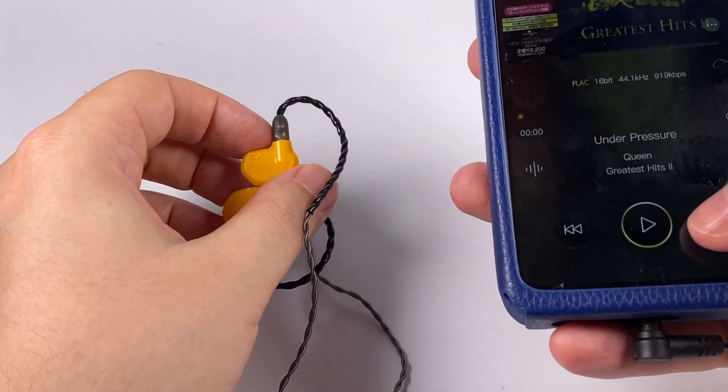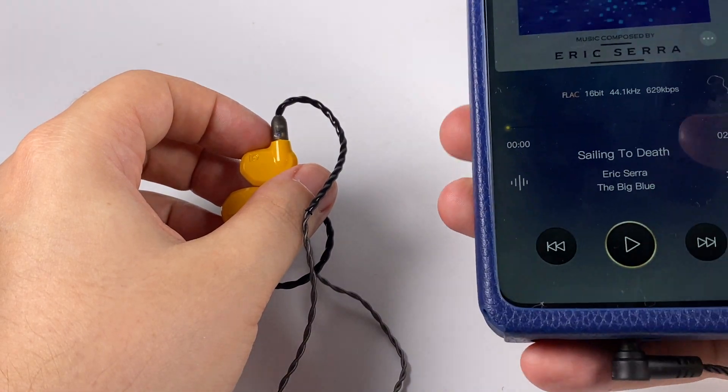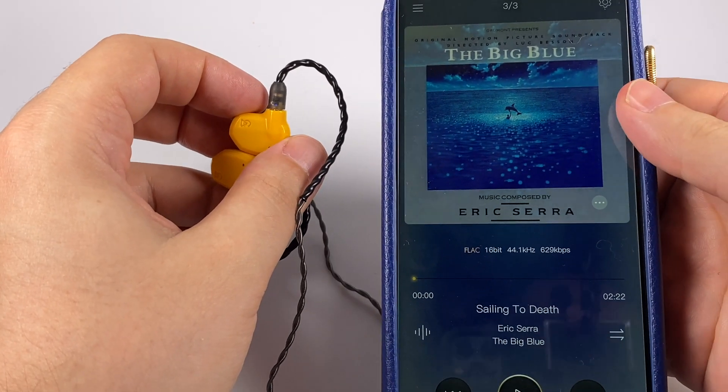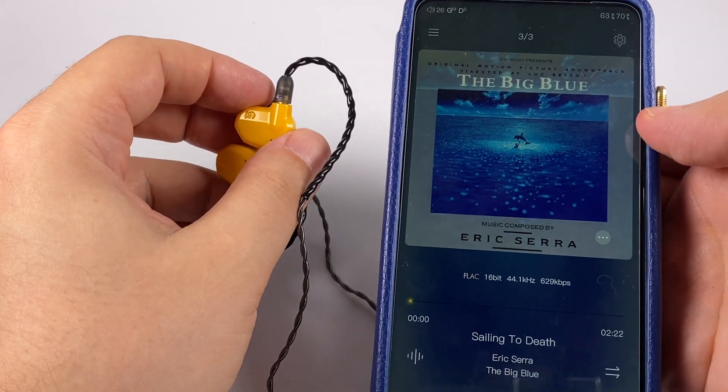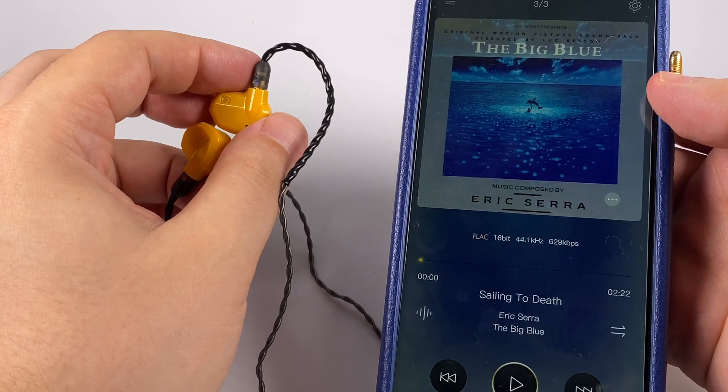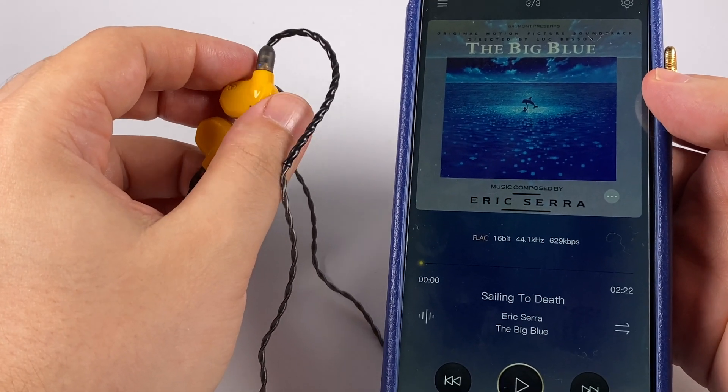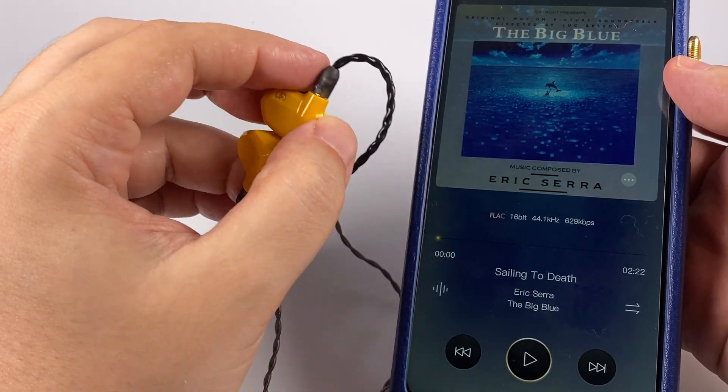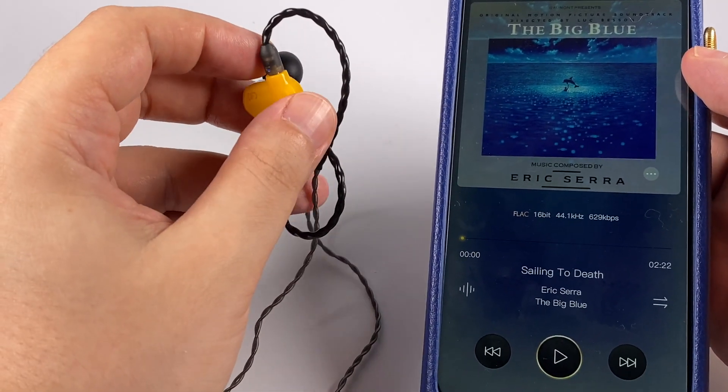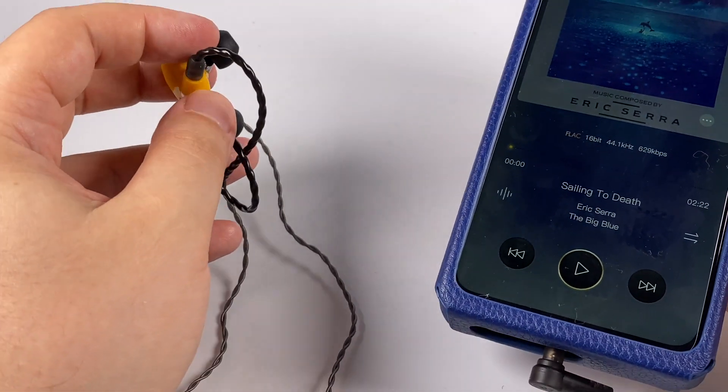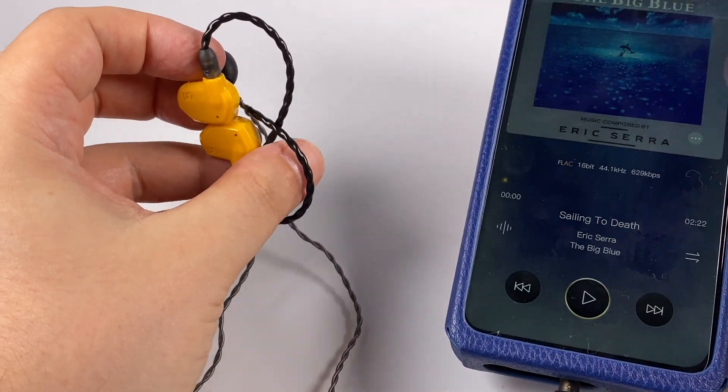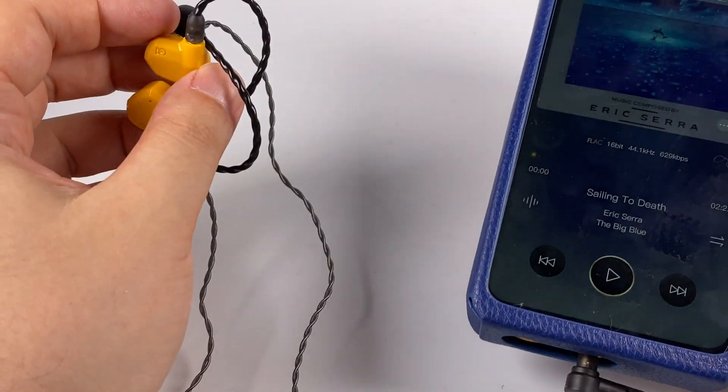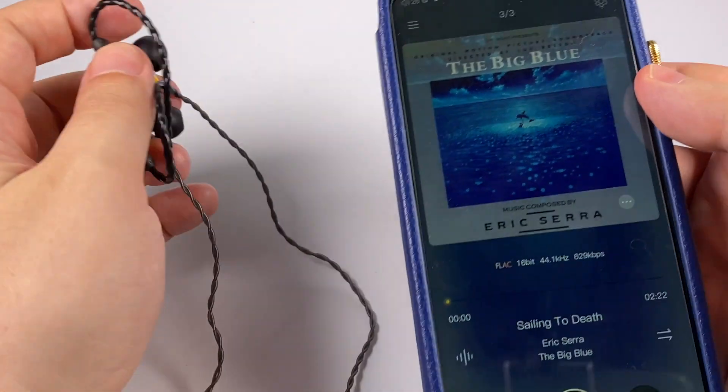And as an example for the treble, I've got Eric Serra, the Big Blue soundtrack. So great movie and soundtrack played vital role here and created the atmosphere of that movie. And track is Sailing to Death. So a lot of synthesizers, lot of airy effects, that sense of underwater sound and this model plays that nicely. So really good performance for such tracks.